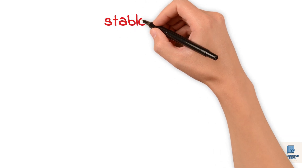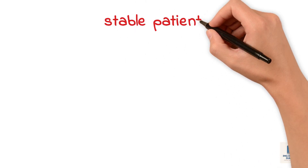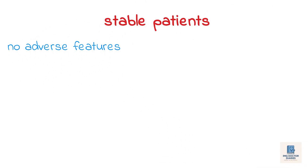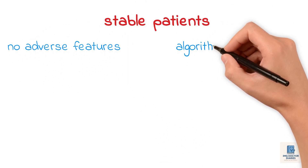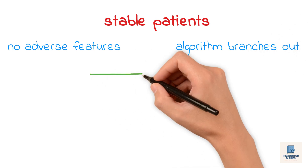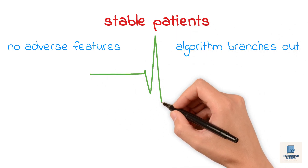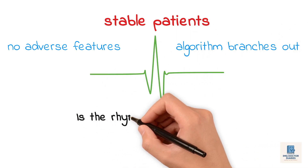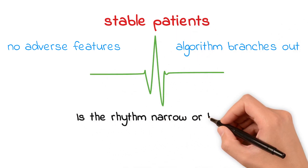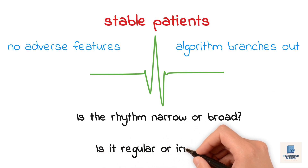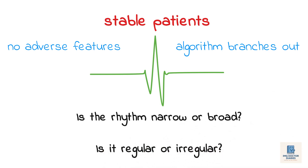Now let's talk about stable patients — the ones with no adverse features. Here's where the algorithm branches out. You now need to look at the ECG and answer two simple questions: Is the rhythm narrow or broad? Is it regular or irregular? These two things guide the rest of the management.